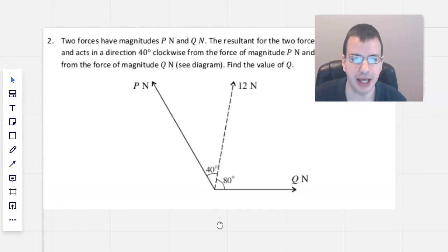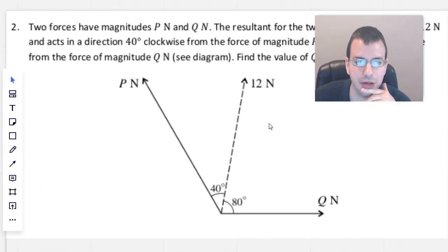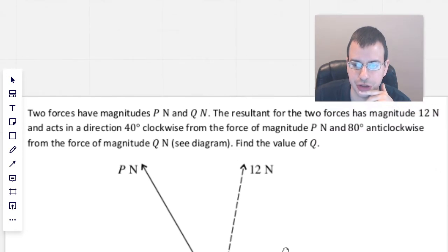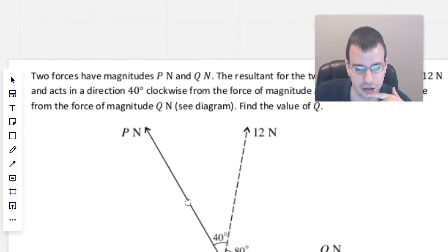Two forces have magnitudes P Newtons and Q Newtons. The resultant for the two forces has a magnitude of 12 Newtons and acts in a direction of 40 degrees clockwise from the force of magnitude P and 80 degrees anticlockwise from the force of magnitude Q, as seen in the diagram below. Find the value of Q.